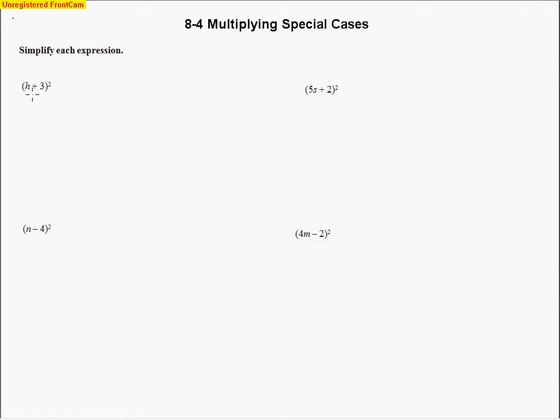This is the lesson for Chapter 8, Section 4, titled Multiplying Special Cases. We're still using the same formula — using FOIL to help us multiply binomials. The difference is the way they are presented to us. For instance, this one is h plus 3, but it's a quantity being squared.